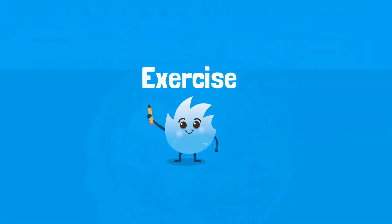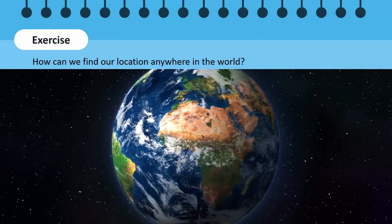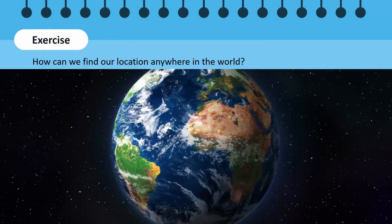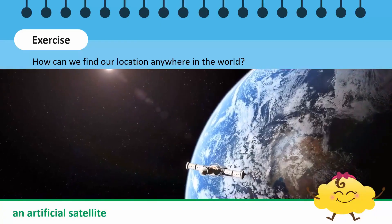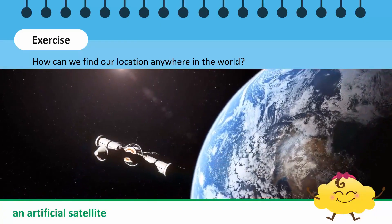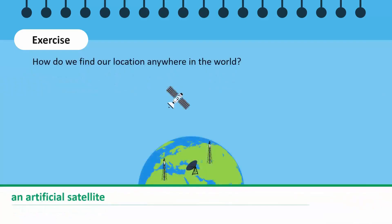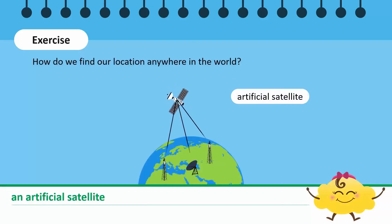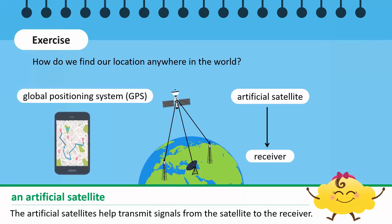Time for an exercise! How do we find our location anywhere in the world? We can find our location on Earth with the help of an artificial satellite. Artificial satellites help transmit signals from the satellite in space to the receiver on Earth. For example, the Global Positioning System (GPS) provides location and time information to the GPS receiver in your phones.